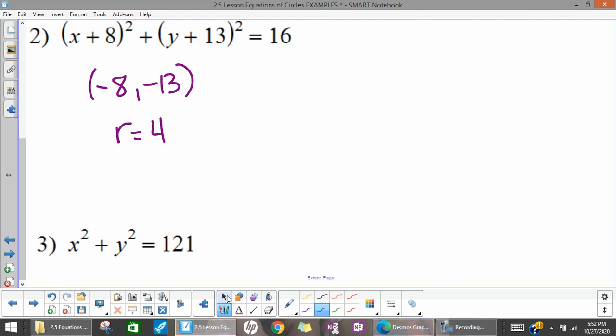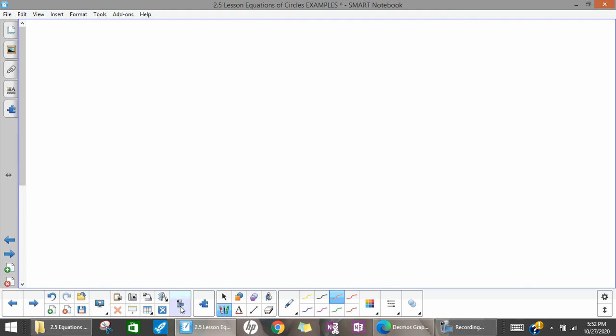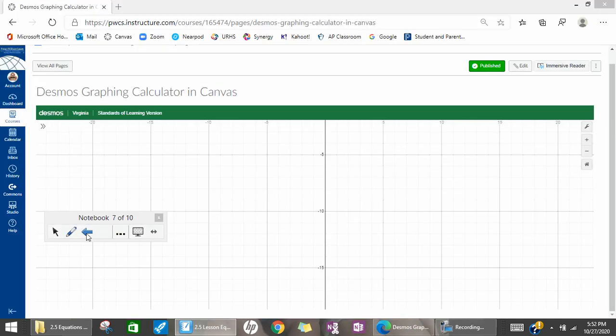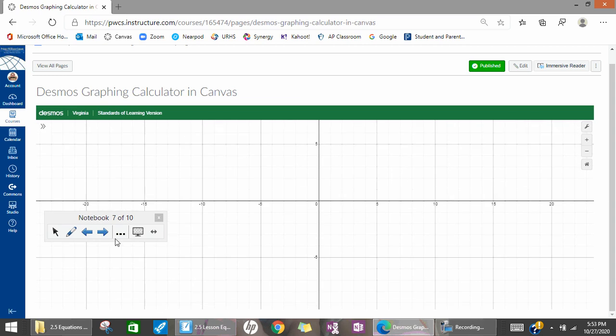And I'm going to do one more. Stick around if you want. Here, my center is at the origin. Since I just have x squared plus y squared, my radius squared is equal to 121. So real quickly, r is 11. The square root of 121 is 11. So I will plot that.